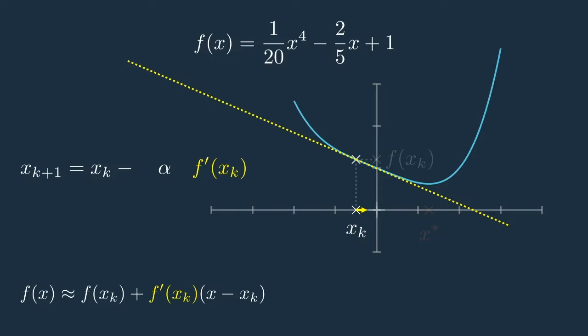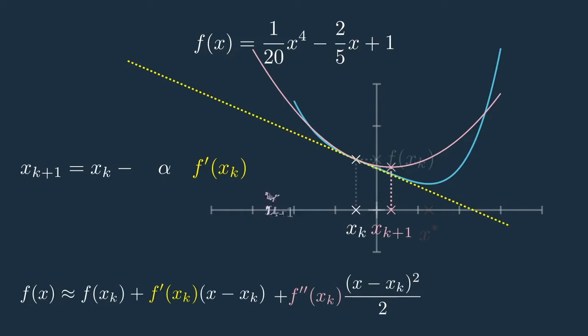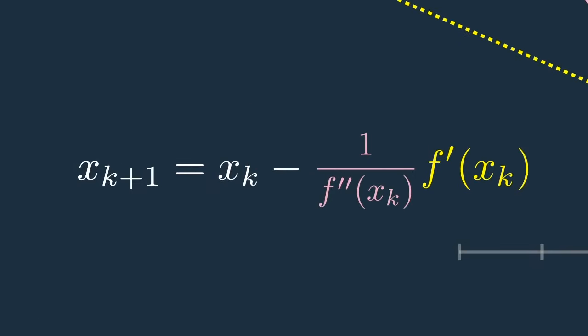Newton's method is based on the observation that using the second derivative in addition to the first derivative can be helpful. If you remember Taylor's series from calculus, we can refine the approximation by including the second derivative of f to get an even better approximation. The resulting function is no longer linear but quadratic — shown here in red. The idea is to minimize this red quadratic function and pick its minimizer as our next iterate. With a little algebra, you realize this is exactly the same as taking alpha to be 1 over the second derivative of f at x_k. And this is exactly what Newton's method is all about.